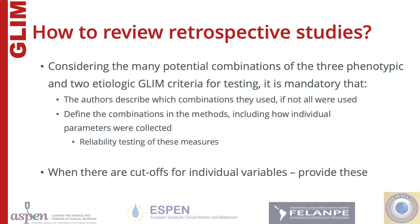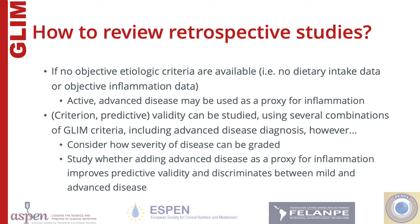There is no wrong combination as long as at least one phenotypic and one etiologic criterion are used. But studies need to describe which parameters were used, how they were collected — for example, measured, or inflammation based on CRP, or the assumption that certain diseases come with inflammation — and which cut-offs were applied. It is also preferable to describe how data were collected, especially for body composition and dietary intake, because methods used may influence the results. This information is needed to further refine GLIM. Authors should preferably use objective methods for the etiologic criteria. If they do not, this is a limitation and should be noted as such. This is an area of GLIM that needs validation and where retrospective studies can be helpful.